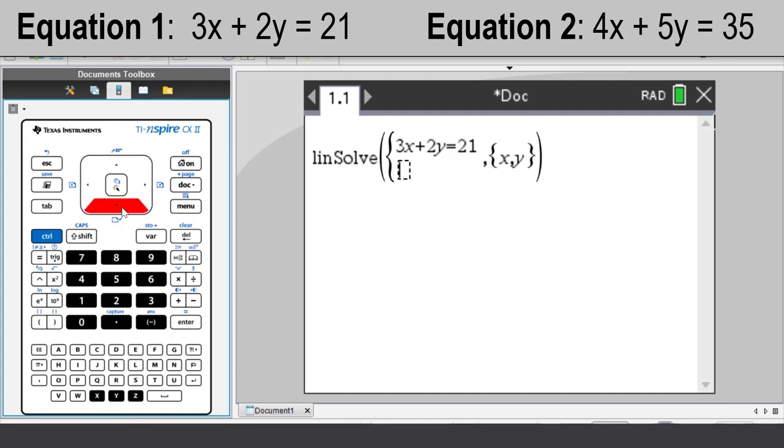Use the down arrow to enter the second equation: 4X plus 5Y equals 35. Press ENTER.